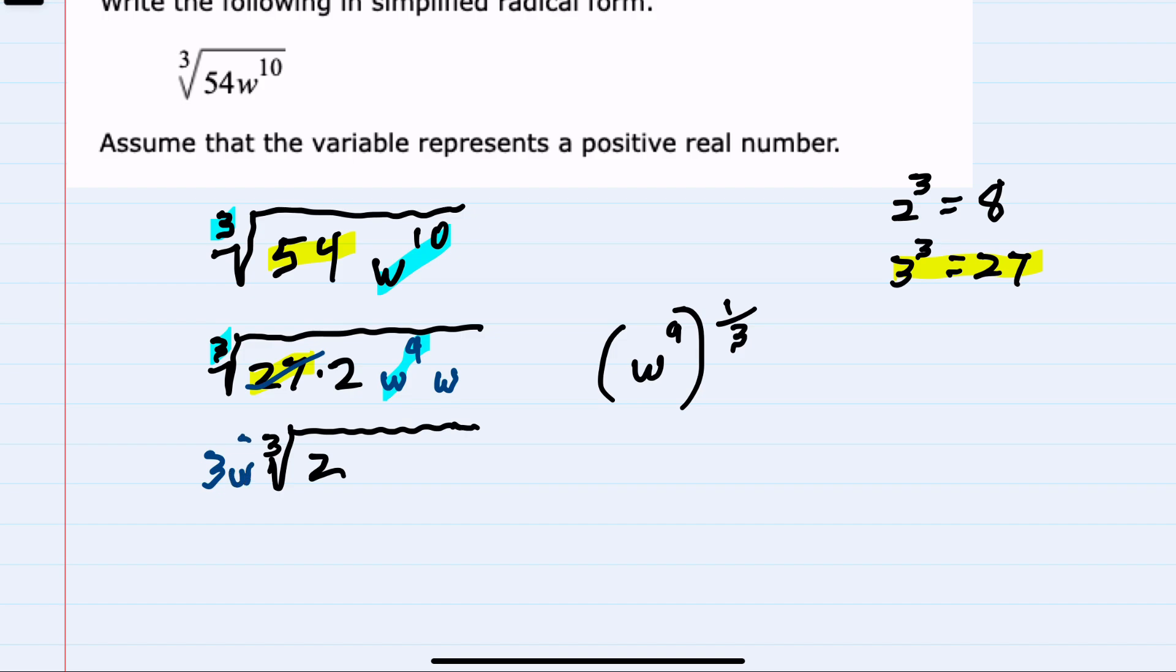meaning it also comes outside, but as a w to the 3rd power, leaving the other w under the radical.